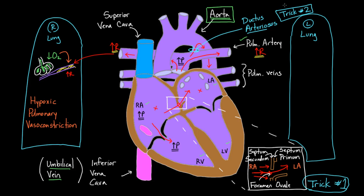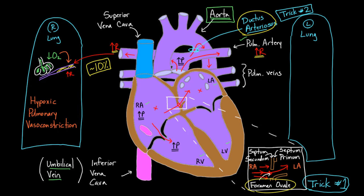Blood can bypass the lungs using either of these two tricks. A small amount — about 10% — does continue to the lungs, but 90% actually goes through one of these two pathways: either through the ductus arteriosus or through the foramen ovale. These are the key interesting differences between the fetal heart and the adult heart.